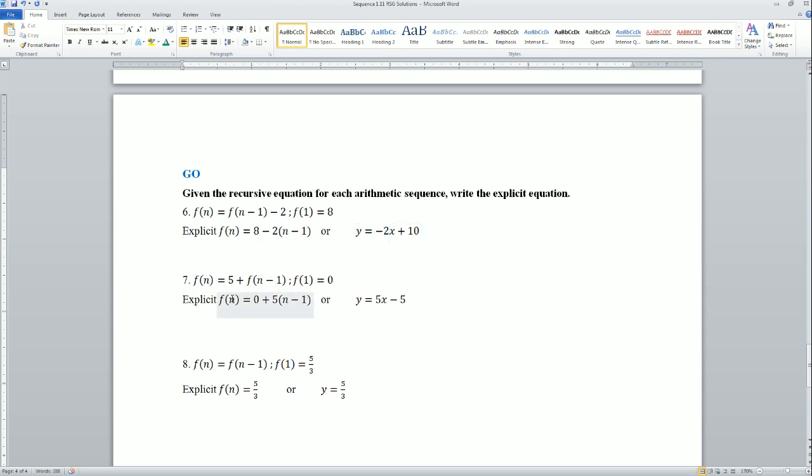Next one: 5 plus the previous term. The first term is 0, so here, thank you. The first term here is 0. The common difference here is 5, so 5 times the previous term, or putting that in y equals mx plus b format, is y equals 5x minus 5, because again, the common ratio here is 5.